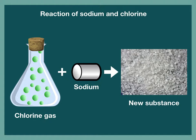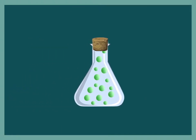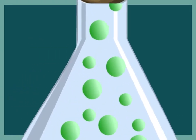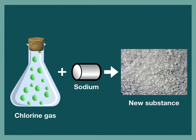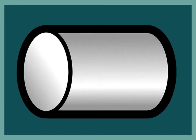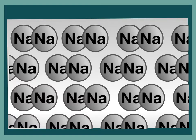First let's look at our chlorine gas. As we zoom in, we can see the gas bubbles are made up of lots of chlorine atoms joined together. Now let's look at our sodium. As we zoom in, we can see the cylinder of sodium is made up of lots of sodium atoms joined together.